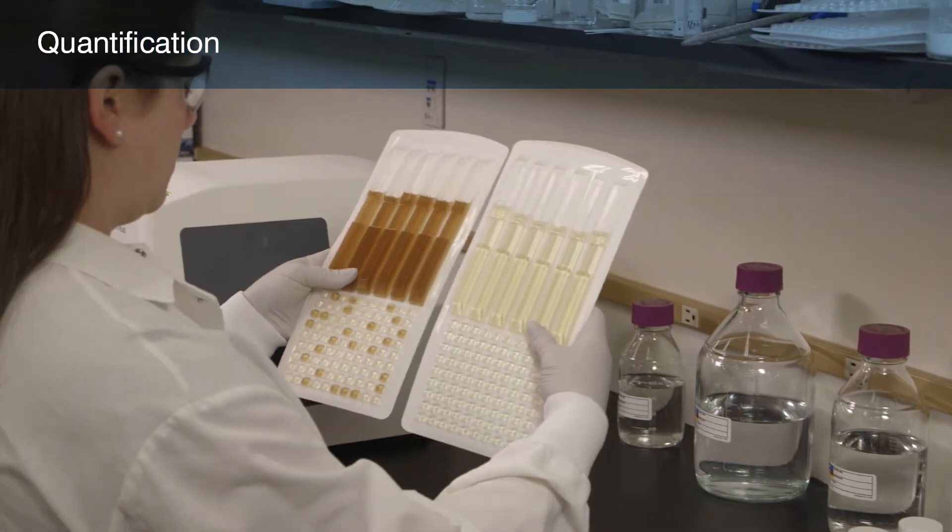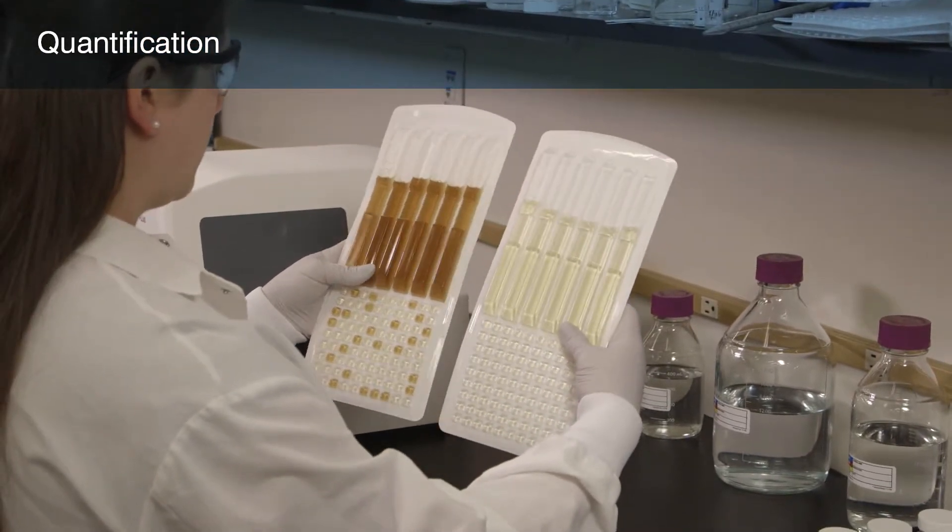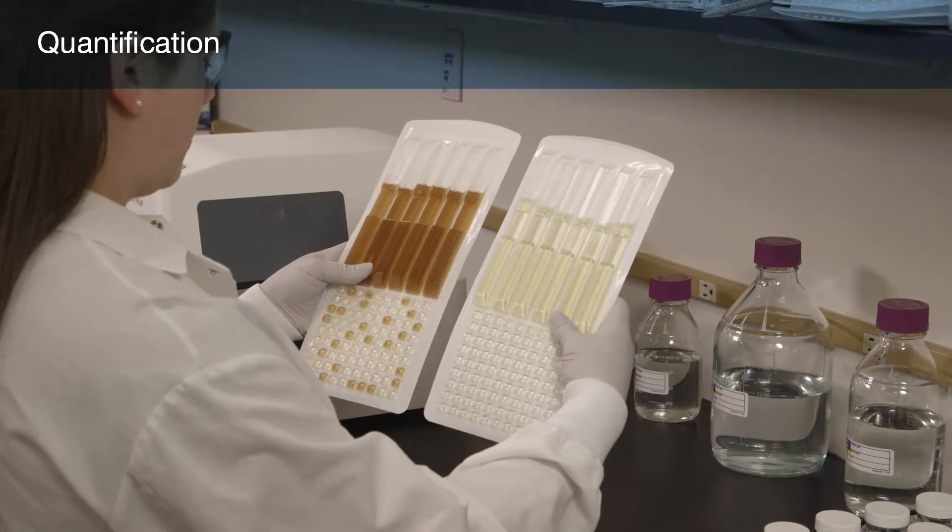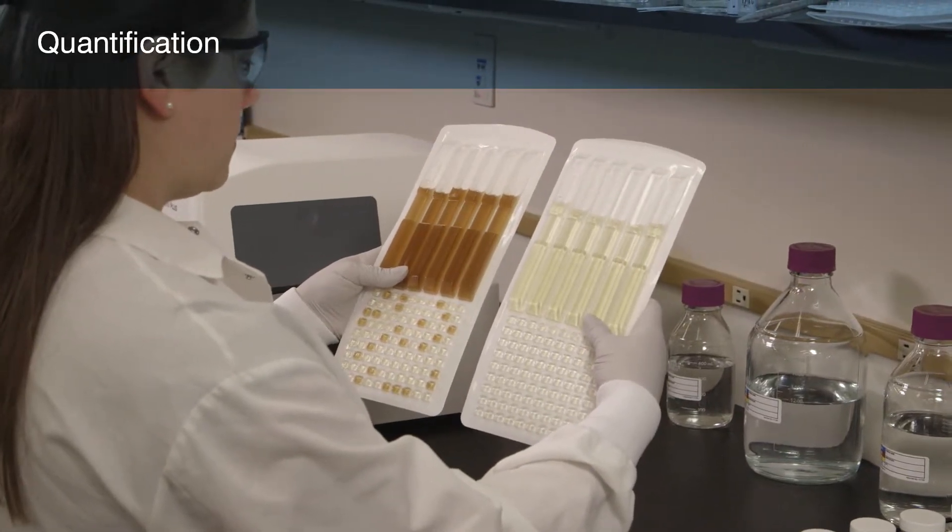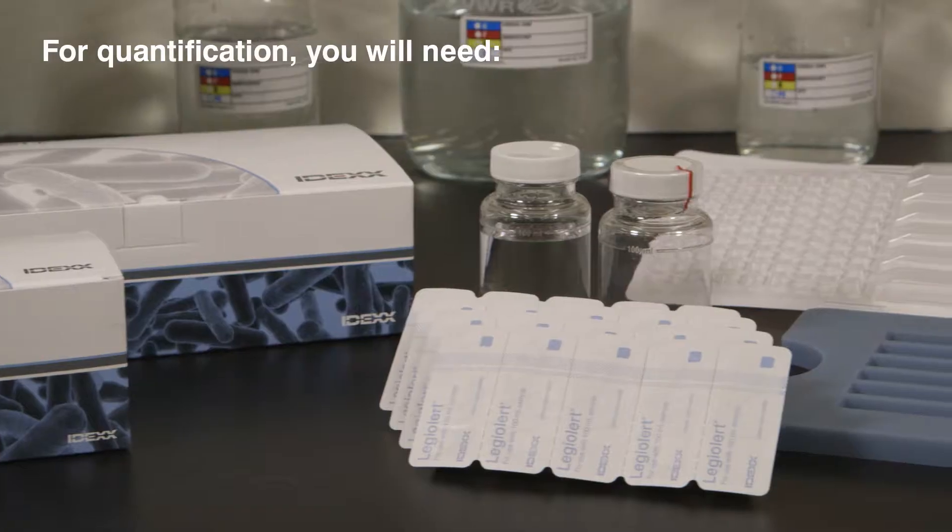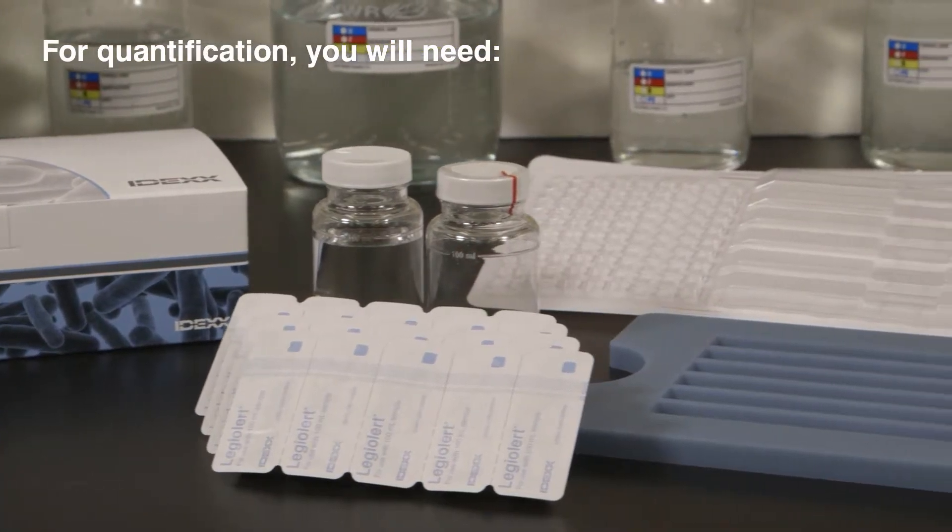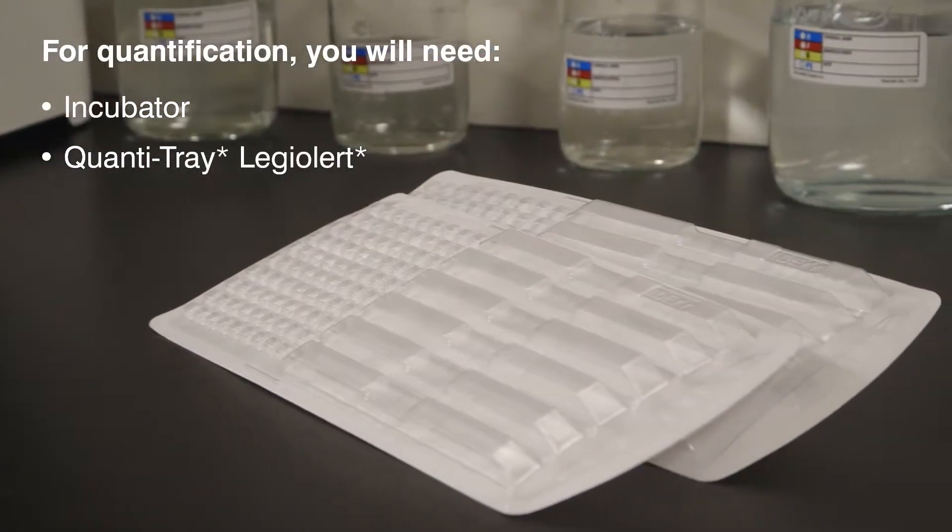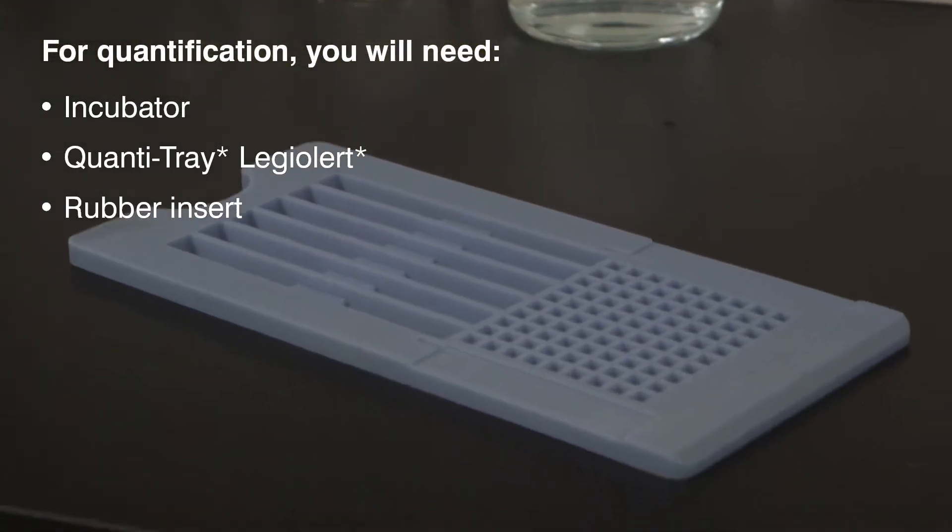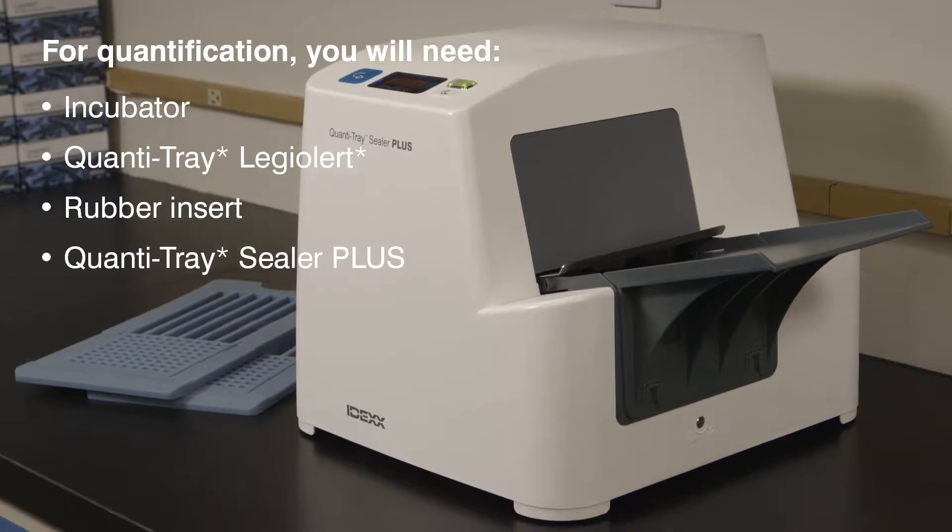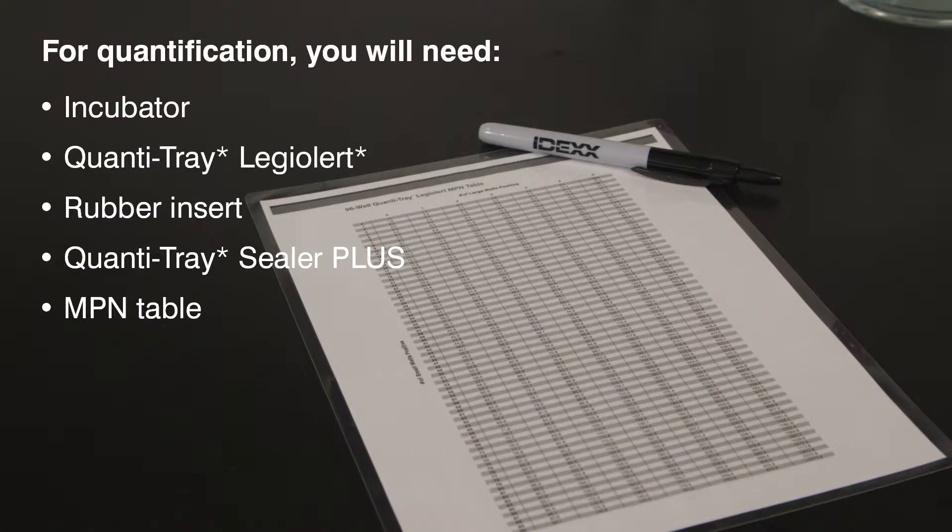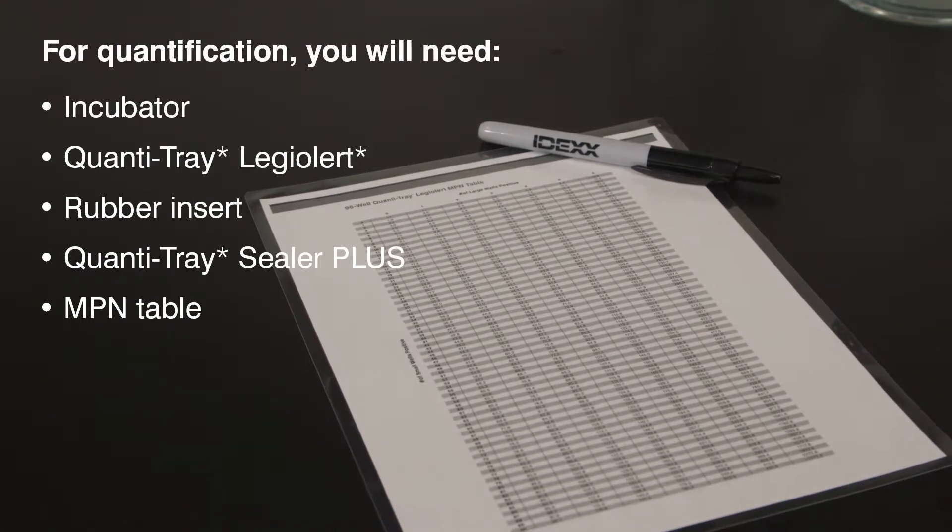In the next few minutes, you'll learn how to use the LEG-ALERT test with the Quantitray LEG-ALERT system to determine the number of Legionella pneumophila in potable and non-potable water samples. For quantification, you will need an incubator, a Quantitray LEG-ALERT tray, a Quantitray LEG-ALERT rubber insert, a Quantitray Sealer Plus, and the included Most Probable Number Table or the IDEX Automated MPN Generator Program found at IDEX.com.